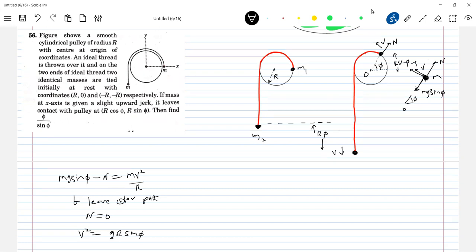So write the conservation of energy. Decrease in potential energy. mg r phi is equal to mg r sin phi plus mv square by 2 plus mv square by 2. Substitute value of v square here. Solve for it. You'll get the required answer.